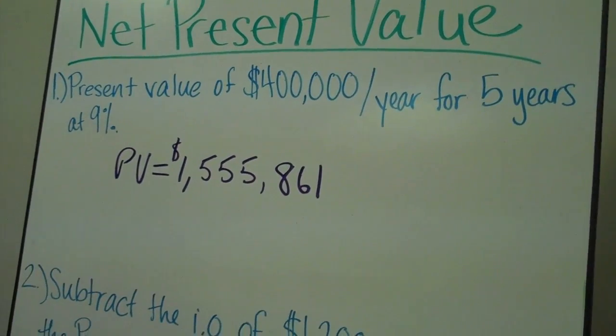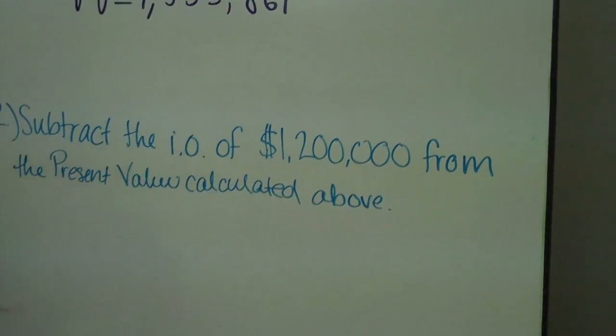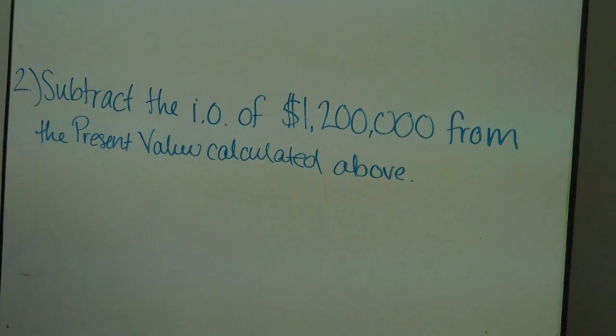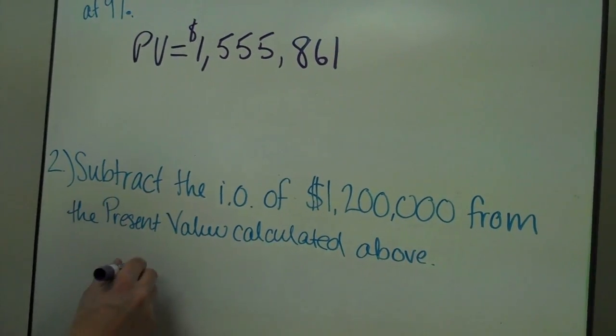Now we need to subtract the initial outlay, our initial payment of $1.2 million, from our present value calculated up here.